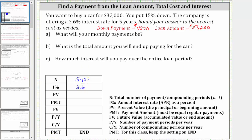PV is the present value, or the starting amount of the loan, which is $27,200. PMT is the payment, which we are solving for. FV is the future value, or the balance of the loan after five years. After five years the loan is paid off, and therefore the future value is zero. Payments per year and compounds per year are both 12.